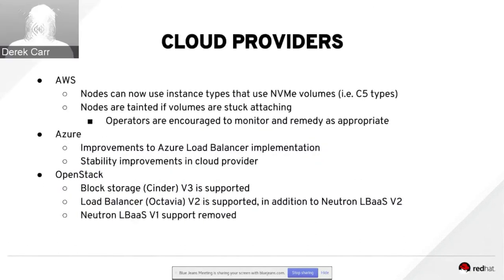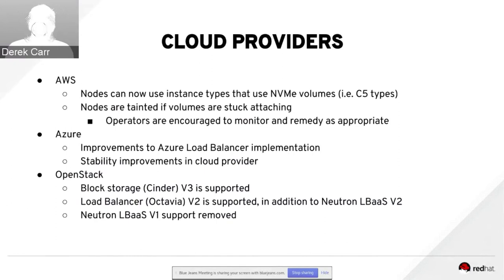Quickly covering cloud providers: in the AWS SIG, work was done to support C5 instance types using NVMe device volumes. Additionally, nodes with EBS volumes stuck attaching are now automatically tainted, and operators are expected to monitor for that taint and remediate — for example, by restarting the node. On Azure, there was work to improve the load balancer implementation and general stability. On OpenStack, a number of iterations improved integration with block storage and the load balancer.